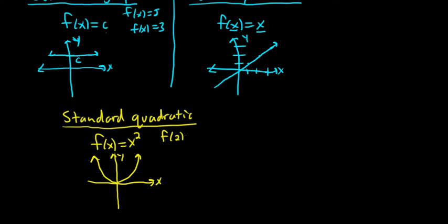If you plug in 2, you get 4. If you plug in 1, you get 1. So you can convince yourself that it does indeed have this shape. So here's 1, here's 1, and then here's 2, and then here's 4. So it gets big really quick.